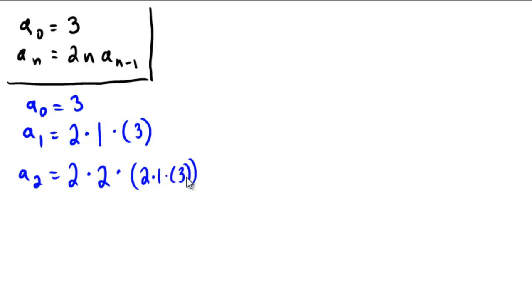And maybe one more just for good measure. a sub 3 would be 2 times the subscript, multiplied by the previous term, which would be 2 times 2 times 2 times 1 times 3. Okay, let's see if this is giving me a pattern for what's going to happen now for my a n.